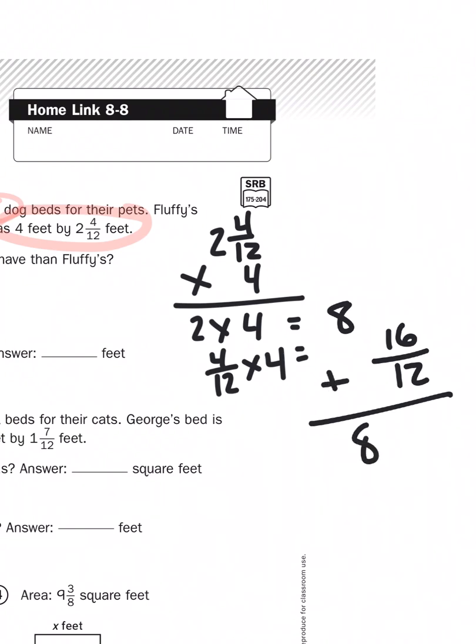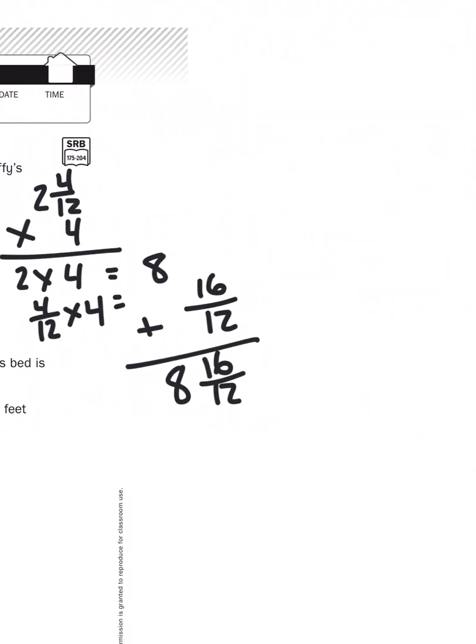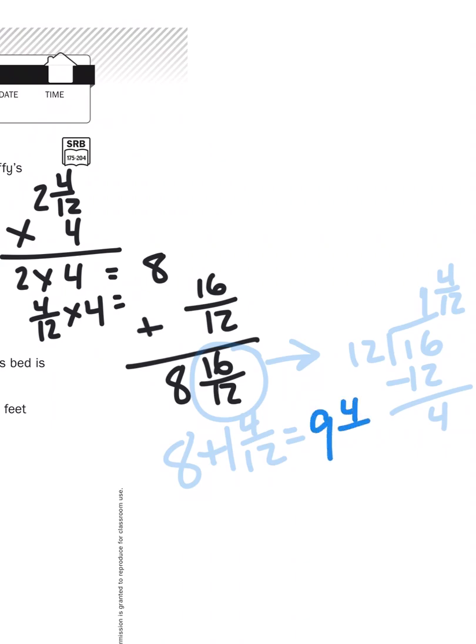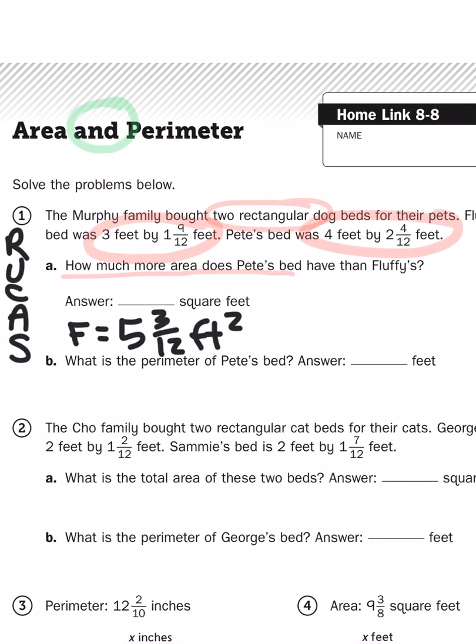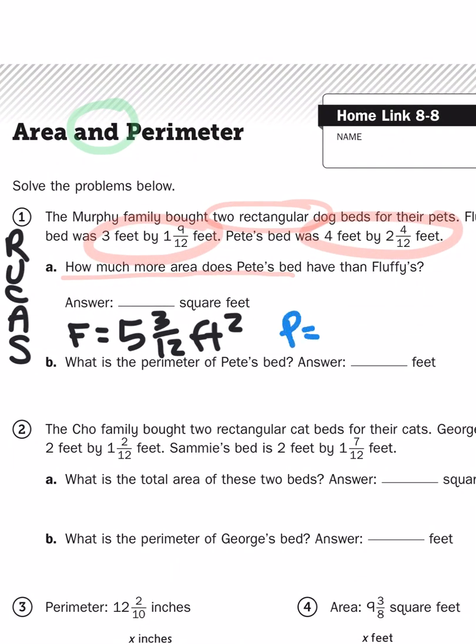Add those two together, and I get a weirdo number. So then I can easily fix that by taking 8 and 16 twelfths. Take the improper fraction, create a division problem. Come up with a mixed number of 1 and 4 twelfths. 1 and 4 twelfths plus 8 is going to give me a total of 9 and 4 twelfths. So Pete's bed is 9 and 4 twelfths feet squared.